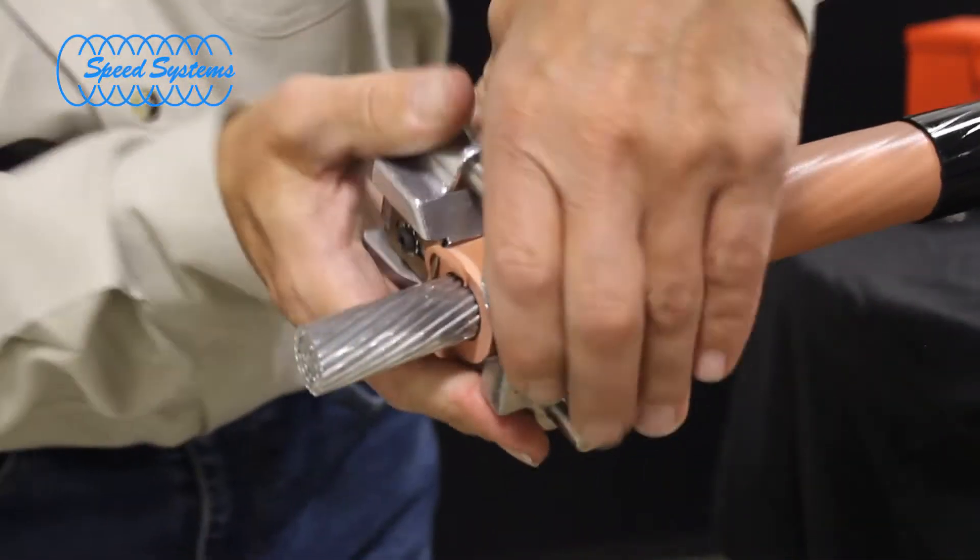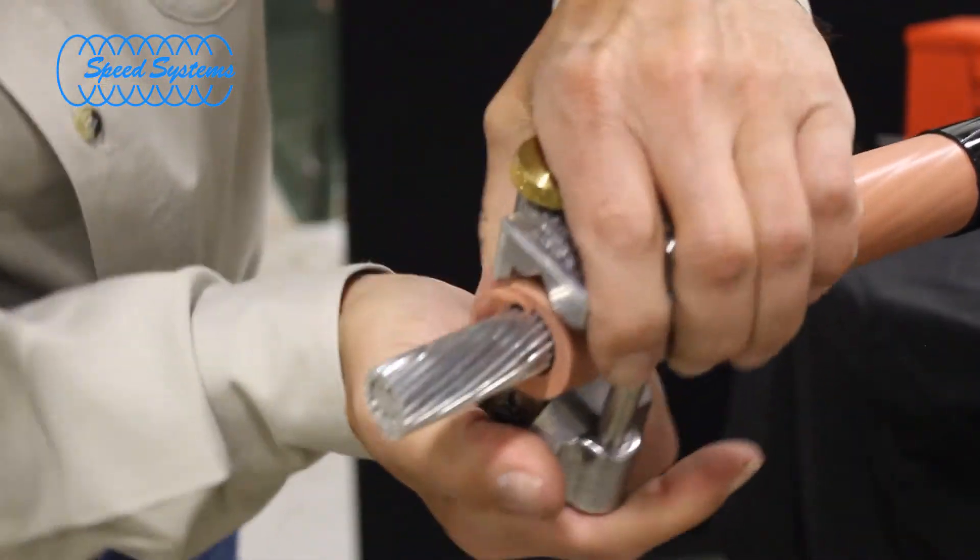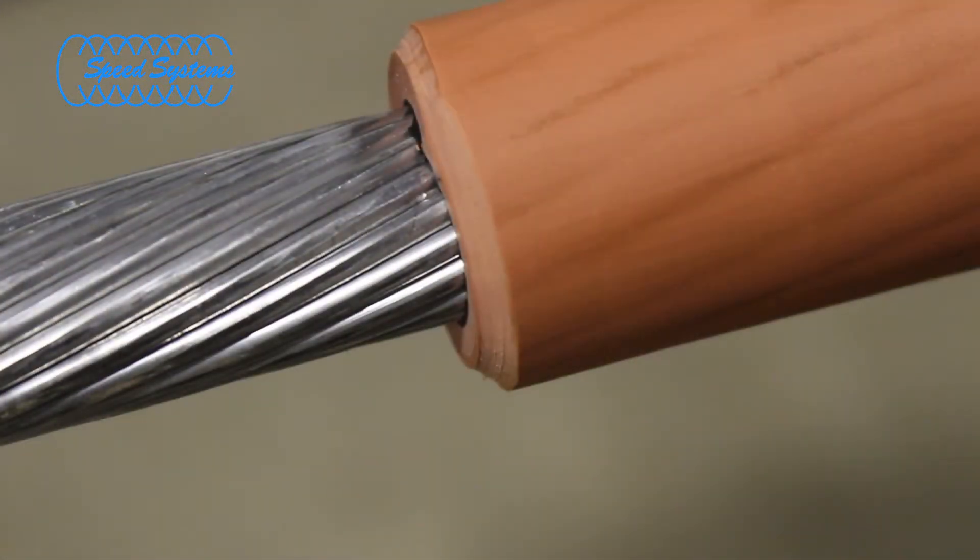It is helpful to chamfer the insulation to ease the installation of molded rubber products. See the Speed Systems Chamfering Tool video for a demonstration.